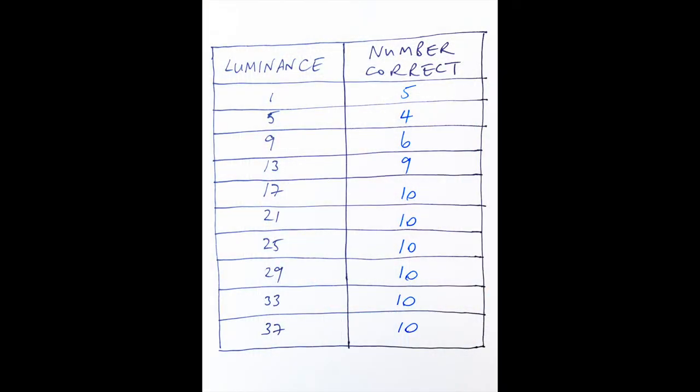Now I'm going to count up how many I got correct for each of the luminance categories and record them in the summary table either by hand or in the computer spreadsheet.